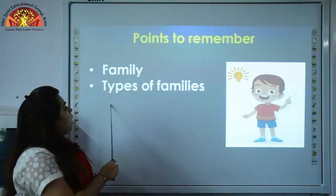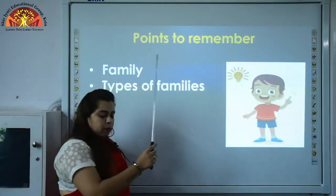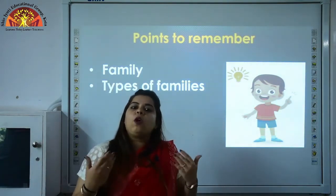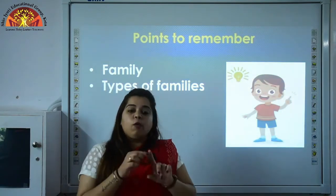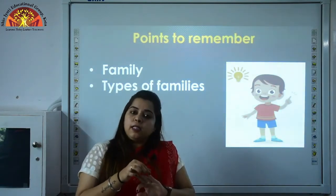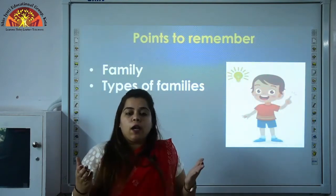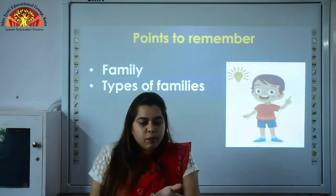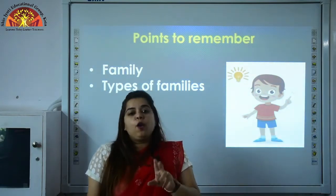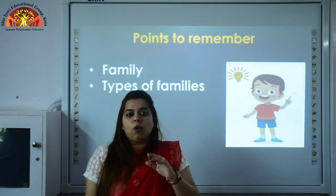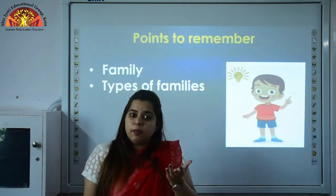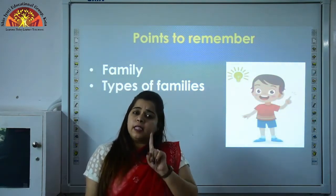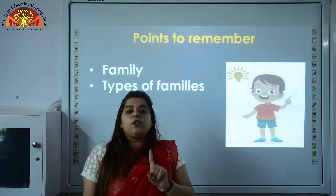What is family and what are the types of families? We all live in a family. A group of people who live together is called a family, in which father, mother, brother and sister live — these are called our family members. Each member has their own name, but your last name is common. You all have the same last name — that is your surname. It belongs to the whole family.